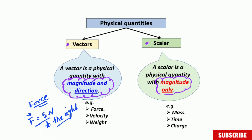Some physical quantities don't need a direction and are well expressed without one — those are scalar quantities. For instance, when you speak about the mass of a person and you say it's 80 kilograms, it doesn't need a direction. 80 kilograms is enough to express the mass of any object.